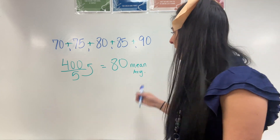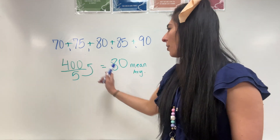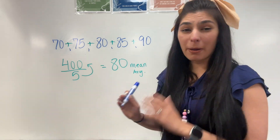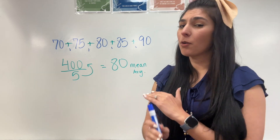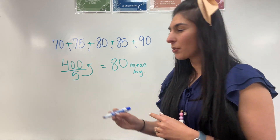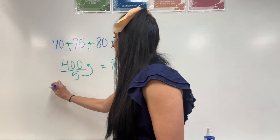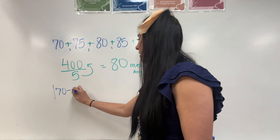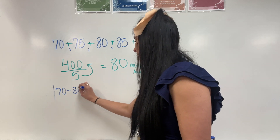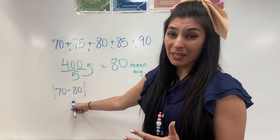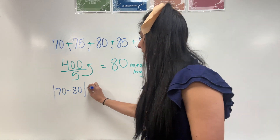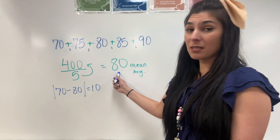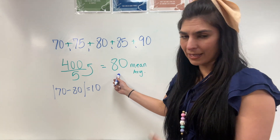For my next step, I need to subtract each of these data points from 80 in order to see how far it is from the average. I'm doing absolute value so we're not worried about negative numbers. For example, if I have 70 take away 80, I would normally get negative 10, but because it's absolute value it just equals 10. So that means 70 is 10 spaces away from 80, which is correct.